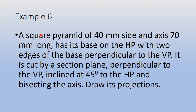It is a square pyramid of side 40 mm and axis 70 mm long, resting with its base on HP and the two edges of its base perpendicular to VP. This is a simple case of a square pyramid directly standing on the HP, so the top view will be a square and front view will be a triangle. It is cut by a section plane perpendicular to VP and inclined at 45 degrees to HP, passing through the center of the solid because it is mentioned as bisecting the axis.